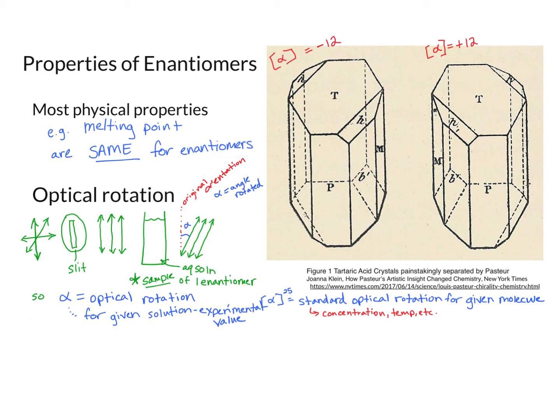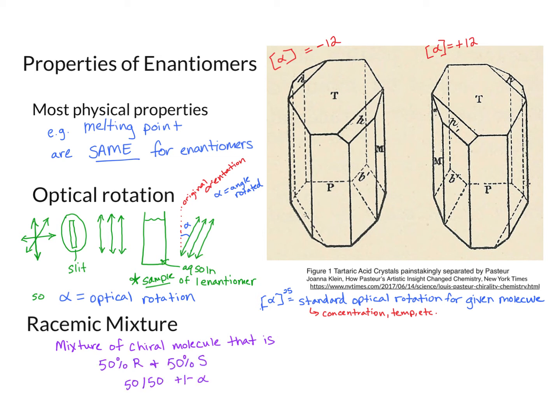So that's called a racemic mixture. So whenever you have something that is chiral, but it's equal amounts of the enantiomers, that's a racemic mixture. And if you put it in this thing that measures the optical rotation, it's going to give you a zero. So that's important too. So racemic mixture is a 50-50 mixture of R and S. We need to know that. And optical rotation has to do with the amount of stuff you have.